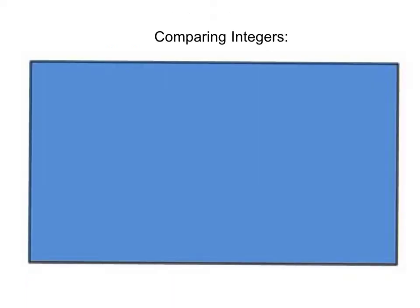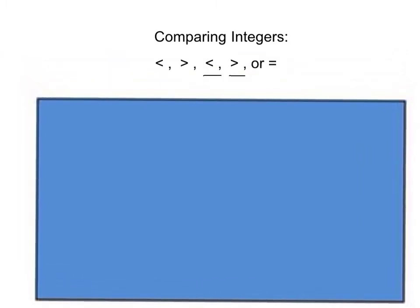Now we are going to take time to talk about comparing integers. When we compare integers, we use the same symbols that you already know how to use to compare whole numbers, decimals, and fractions. These symbols are: less than, greater than, less than or equal to, greater than or equal to, or equal to. Please take a moment to pause the video and write down the symbols we use to compare integers.